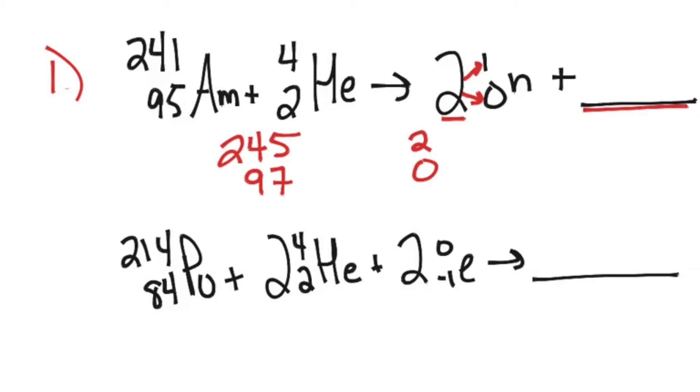So to find the identity of the unknown, I can subtract 245 minus 2, and I'll get a top number of 243, and I can do 97 minus 0, and I get a bottom number of 97, and that gives me the element BK, which goes with atomic number 97.